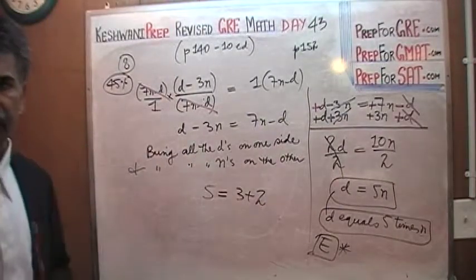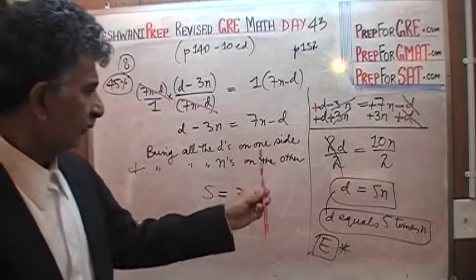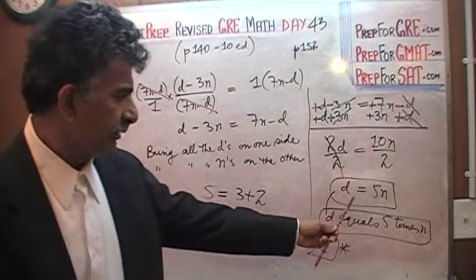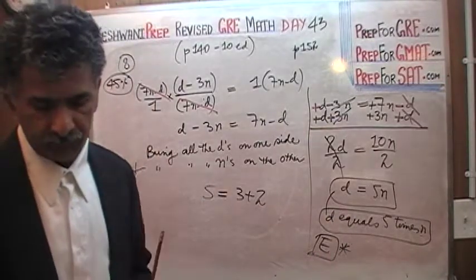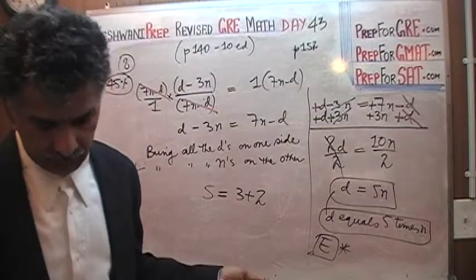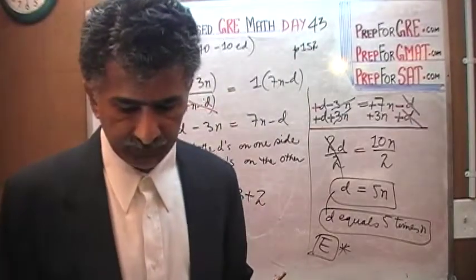I do not know why 55% of the people who took the exam would have trouble with it. All you have to do is solve it, establish the relationship between D and N, and find the statement that comes closest to it. D equals five times N, and the only statement that actually says that is E.